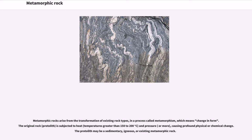Metamorphic rocks arise from the transformation of existing rock types in a process called metamorphism, which means change in form. The original rock, called the protolith, is subjected to heat — temperatures greater than 150 to 200 degrees Celsius — and pressure, causing profound physical or chemical change. The protolith may be a sedimentary, igneous, or existing metamorphic rock.